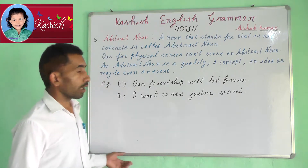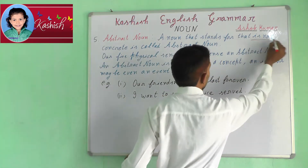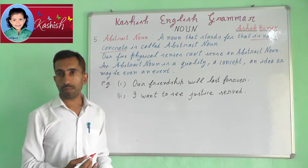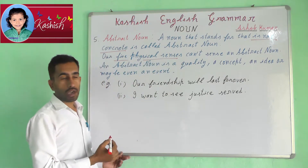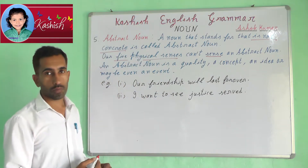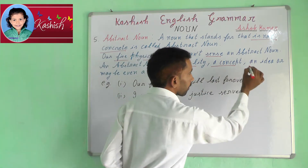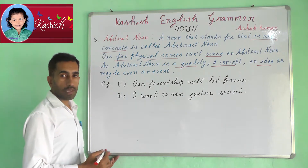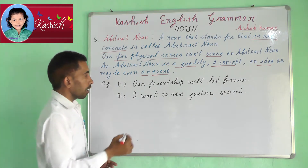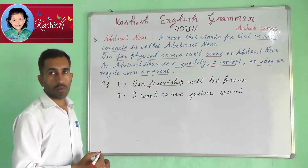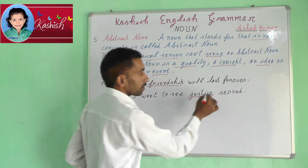Fifth, Abstract Noun. A noun that stands for something that is not concrete is called an Abstract Noun. Our five physical senses cannot perceive an Abstract Noun. An abstract noun is a quality, a concept, an idea, or maybe even an event. For example, our friendship will last forever. I want to see justice served.